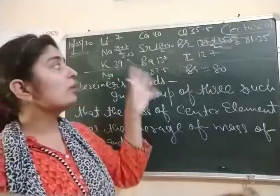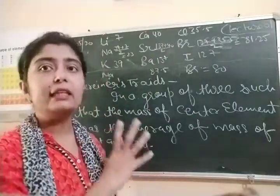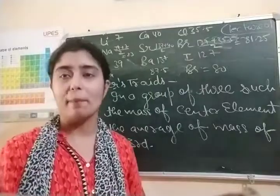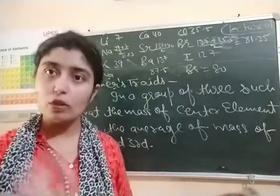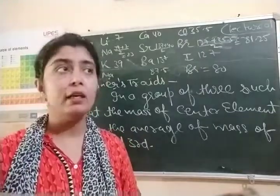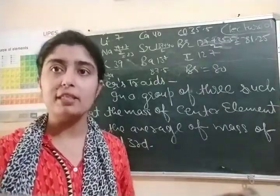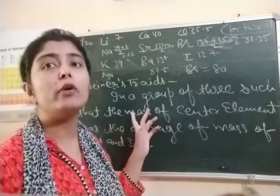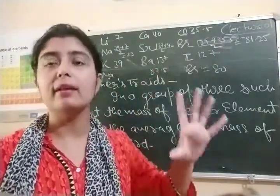But he could only make groups of three in this way - he could only make three such groups. After that, his concept stopped. After that, he could not explain more details related to elements. So according to Dobereiner, the periodic table arrangement would be in groups of three. But after that, a new concept came.